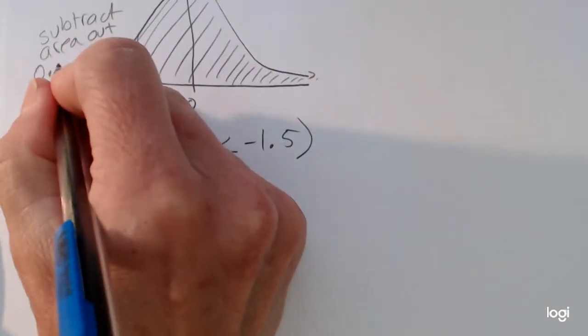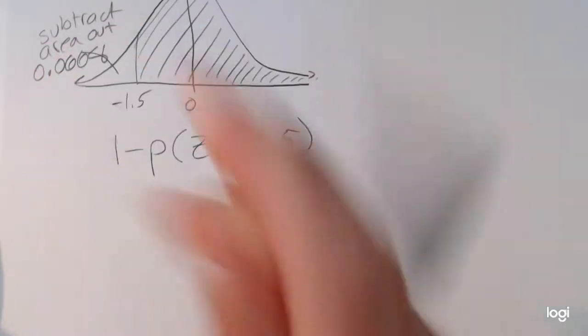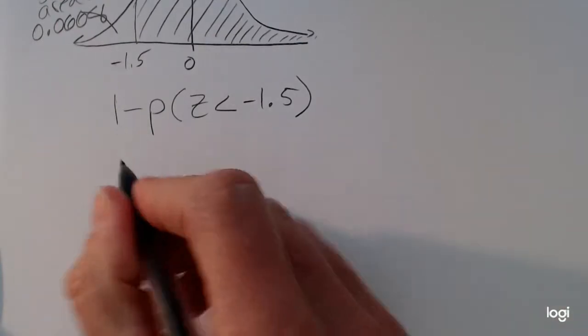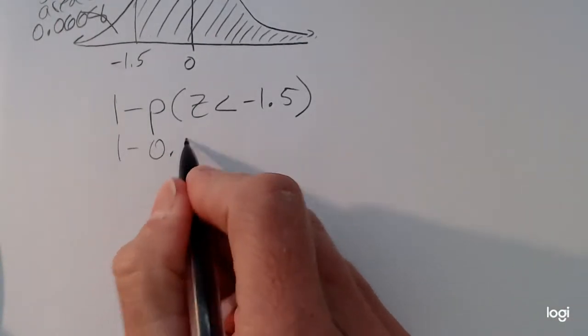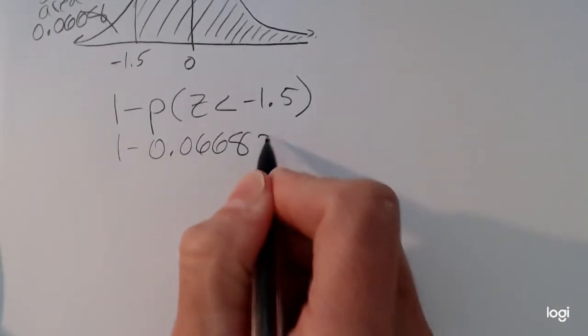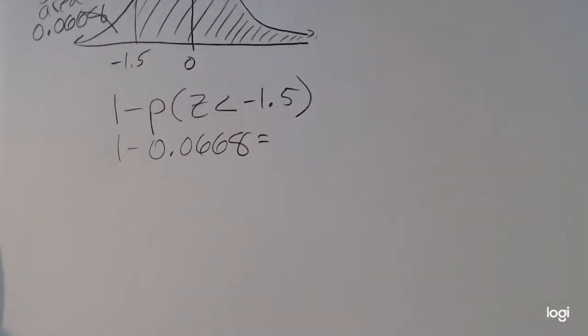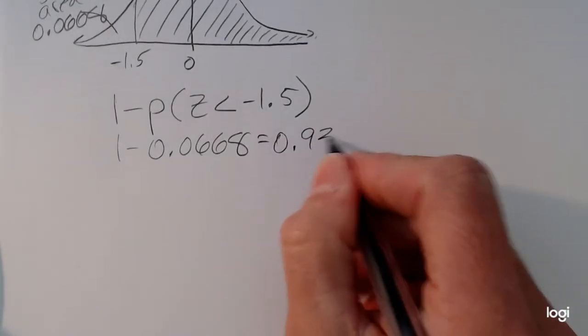So this is 0.0668, that little tail. So 1 minus 0.0668 equals 0.9332.